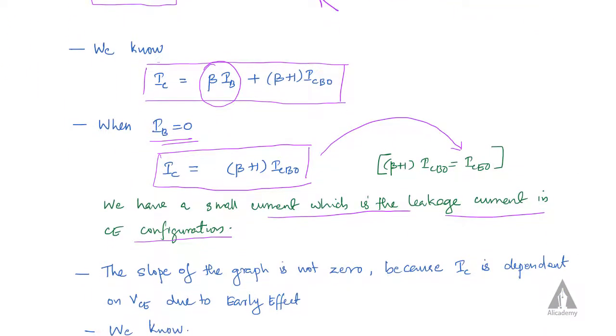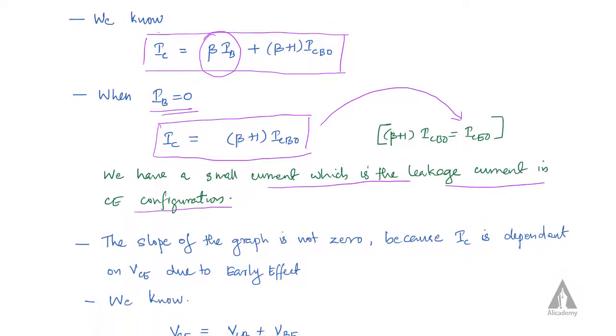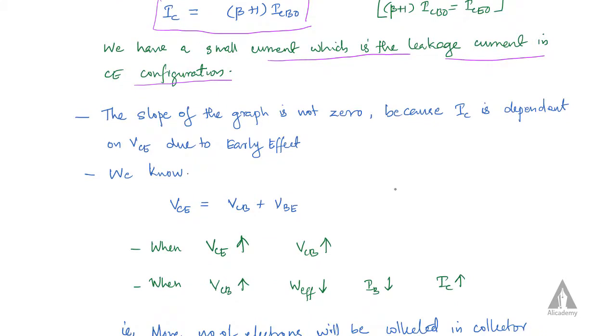The slope of the graph is not zero because IC is dependent on VCE due to the Early effect.